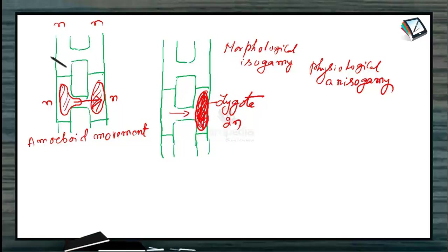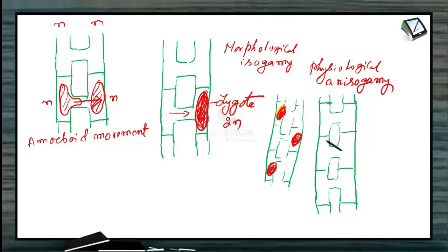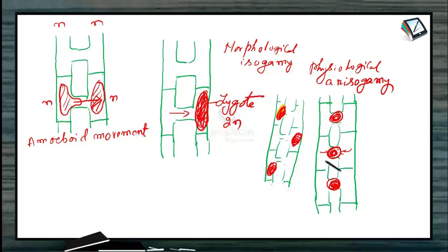It is not always necessary that gametes go from one filament to another. Sometimes the alternate cells in every filament have both plus and minus, meaning alternate cells have zygotes. Or, if both gametes are morphologically as well as physiologically isogamous, both of them move into the conjugation tube and the zygote is found in the conjugation tube. So this is scalariform conjugation.